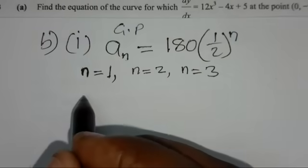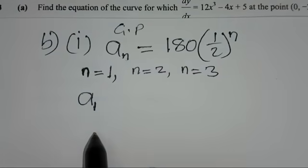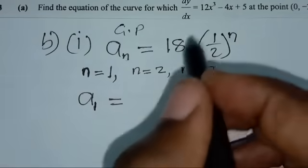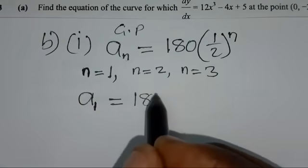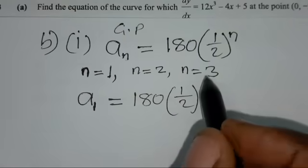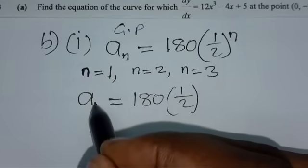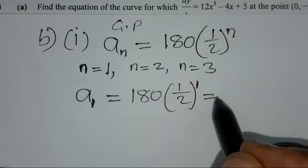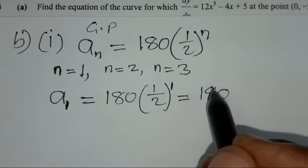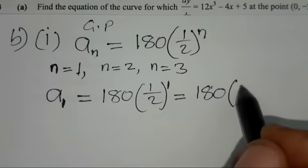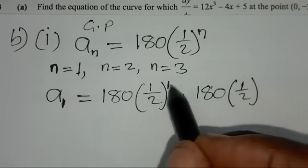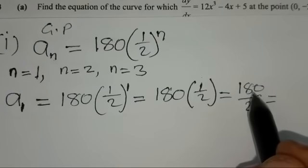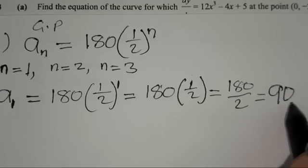For the first term, a1 equals 180 times (1/2) to the power 1. Any number to the power 1 is just itself, so we have 180 times 1/2, which equals 180 divided by 2, giving us 90 as the first term.